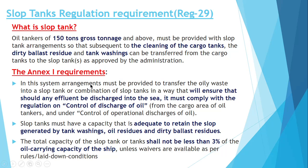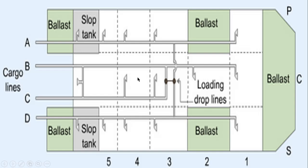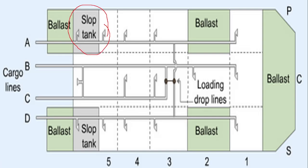Now let's see the requirement of Annex 1 Regulation 29. It says that the slop tank arrangement should ensure that any effluent discharged into the sea must comply with the regulation on control of discharge of oil — meaning it must pass through the ODME. Whenever you are transferring from the slop tank overboard, it should pass through the ODME and follow the ODME discharge criteria.